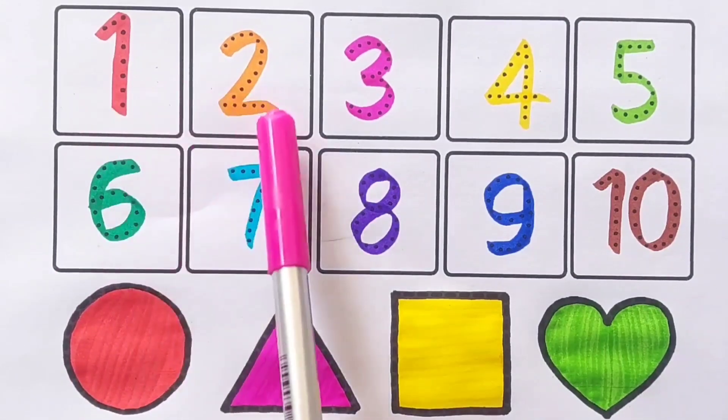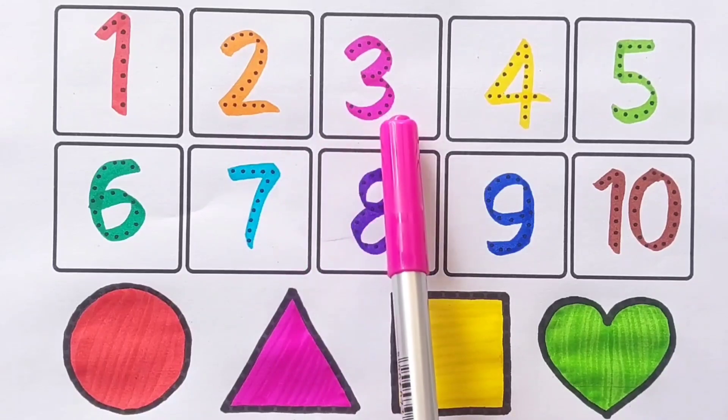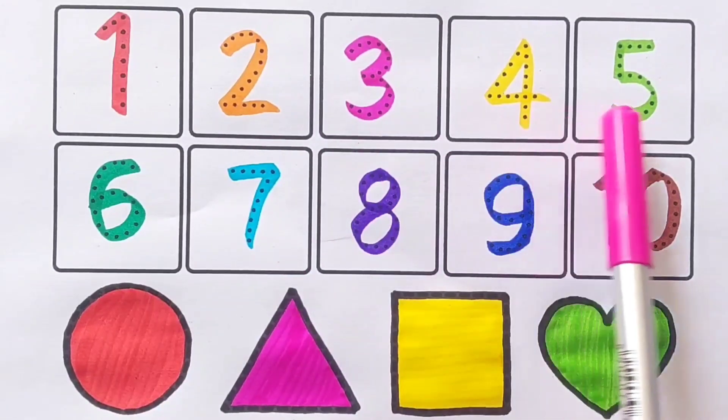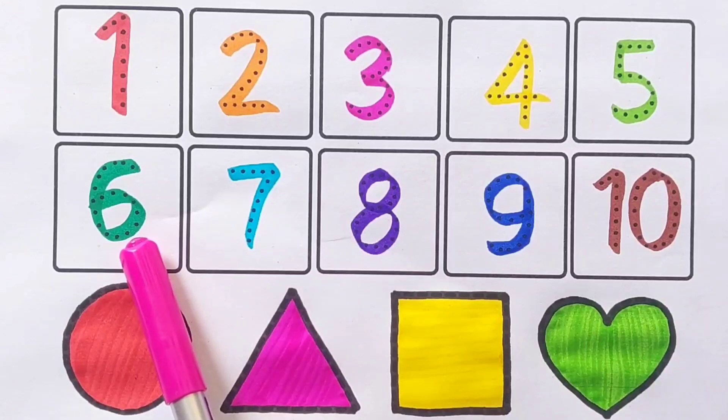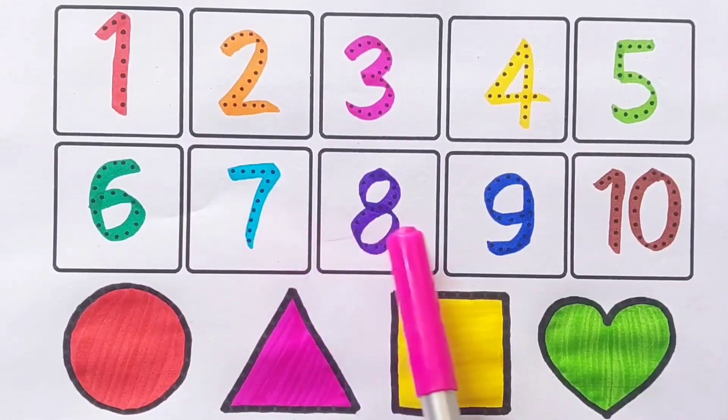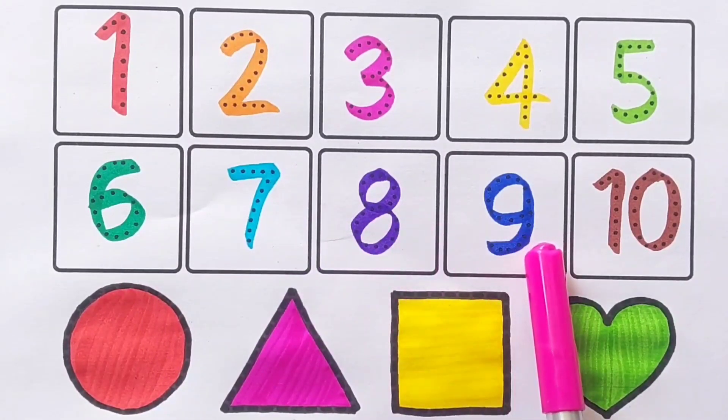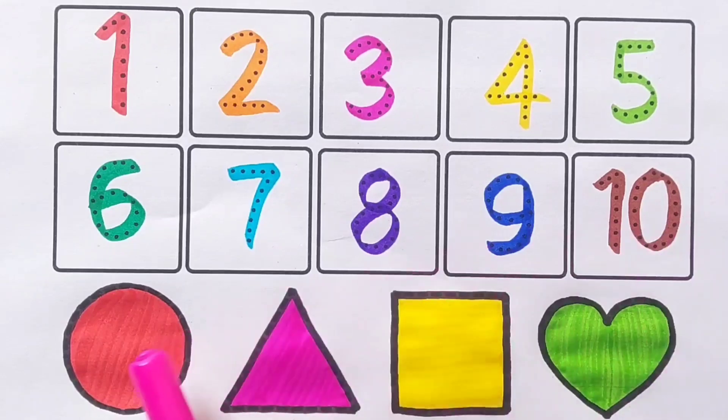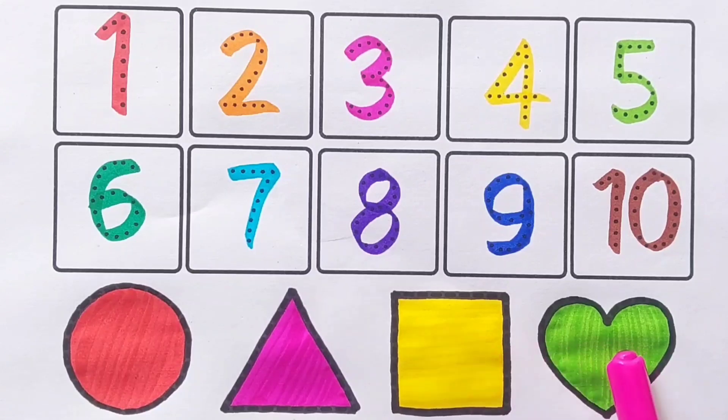One, two, three, four, five, six, seven, eight, nine, ten. Circle, triangle, square, heart.